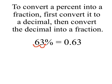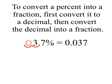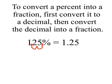Here's 63%. We know it's .63. We write 63 over 100, and that's already in lowest terms, so we're done. 3.7% — we've already converted to .037, we write 37 thousandths, and that's already in lowest terms. 125% — we know it's 1.25, and 1.25 is one and one-fourth, or as an improper fraction, five-fourths.